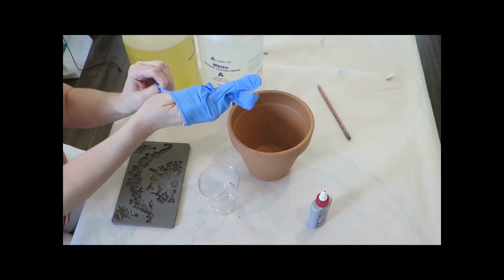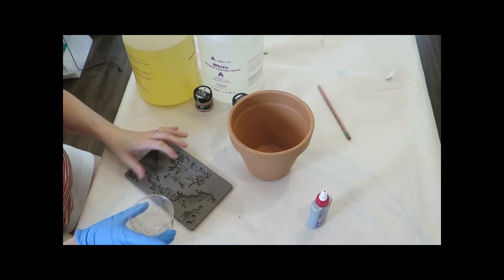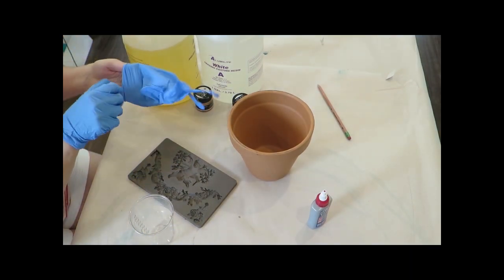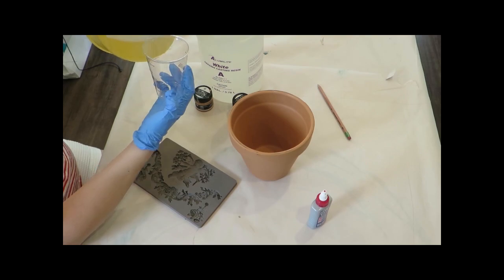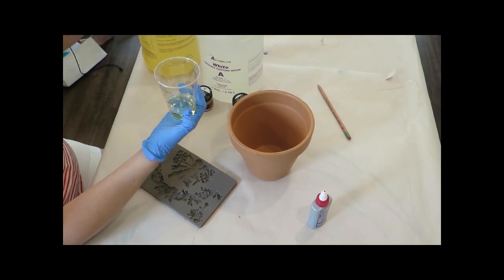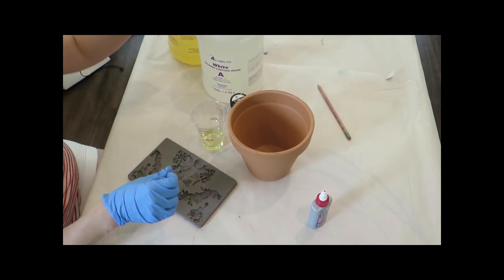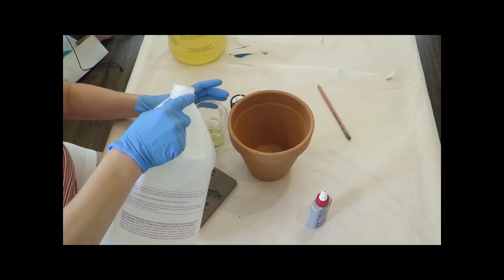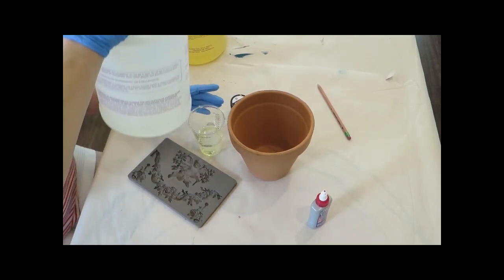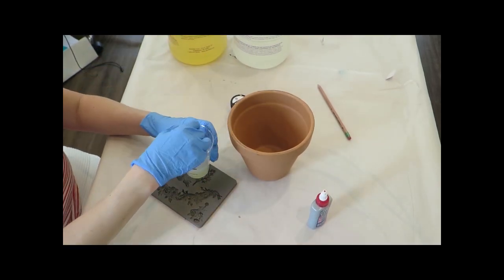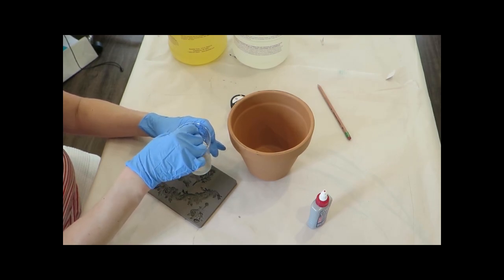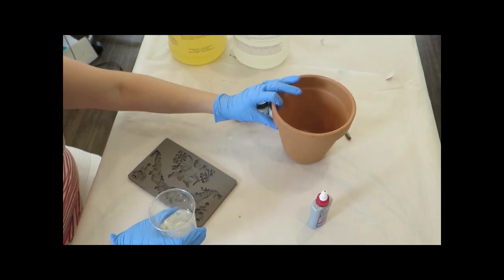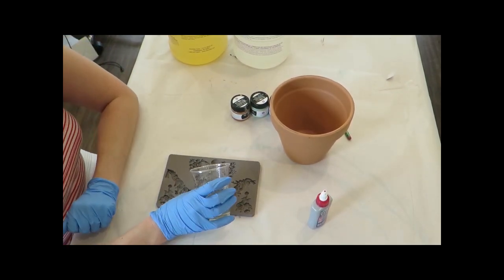You'll walk away with an overall good understanding of how to do this project. Whenever I do resin I always use gloves to avoid getting it on your hands. This resin is a two-part white casting resin, so you mix it in equal amounts. It's important to get them equally measured but it's not rocket science, so don't stress too badly. Stir it for 10 seconds.